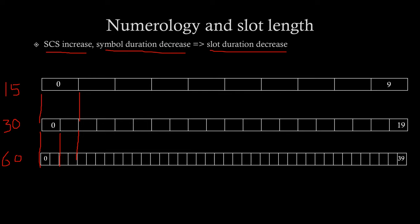So, to summarize this if we increase subcarrier spacing symbol duration will decrease and hence slot duration will decrease because there are fixed number of slots equal to 14, I beg your pardon there are fixed number of symbols equal to 14 in one slot.